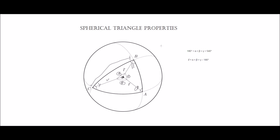Another interesting concept is spherical excess, represented here by the letter E. The spherical excess is how much the sum of the interior angles deviates from 180 degrees. This makes sense because 180 degrees is the norm for Euclidean triangles, so it's natural to call the deviation the spherical excess — by how much the sum of the interior angles of the spherical triangle exceeds 180 degrees.